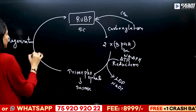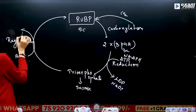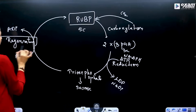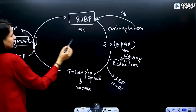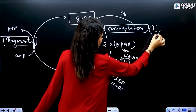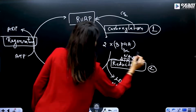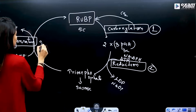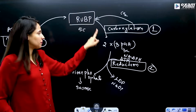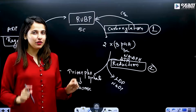In the regeneration step, we use ATP to regenerate RuBP from ADP. This is our third step. So the three steps are: one — carboxylation; two — reduction; three — regeneration. This is our primary carbon dioxide acceptor, and this is our first stable product.